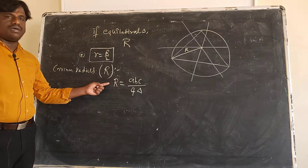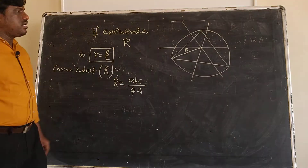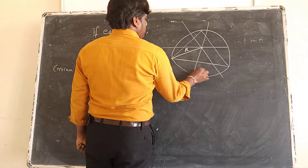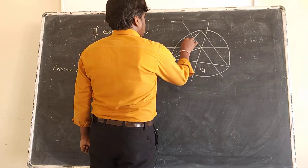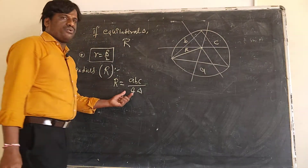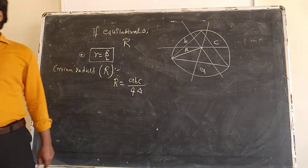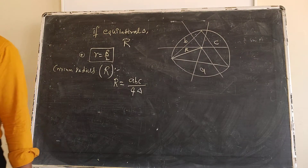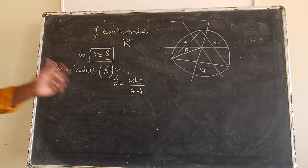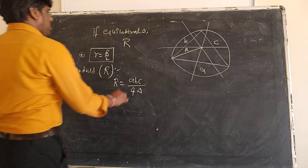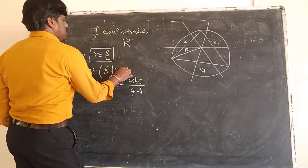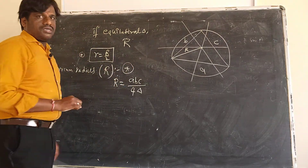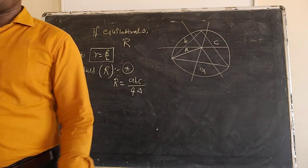Capital R is equal to A·B·C divided by 4 times the area of the triangle. This is an important formula — JEE has already asked questions on this.